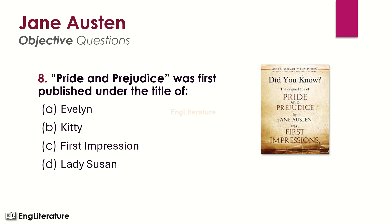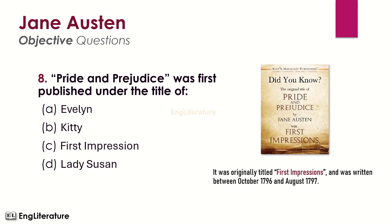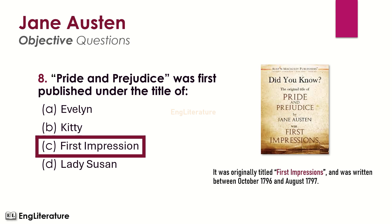Pride and Prejudice was first published under what title? It was originally titled First Impressions and was written between October 1796 and August 1797. The right choice is number C — Pride and Prejudice was first published under the title First Impressions.